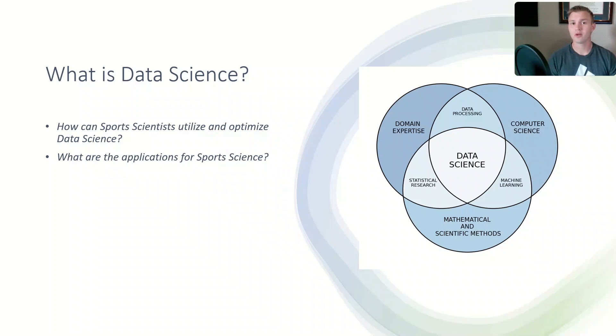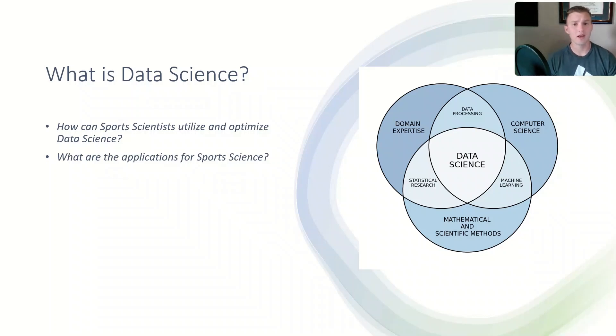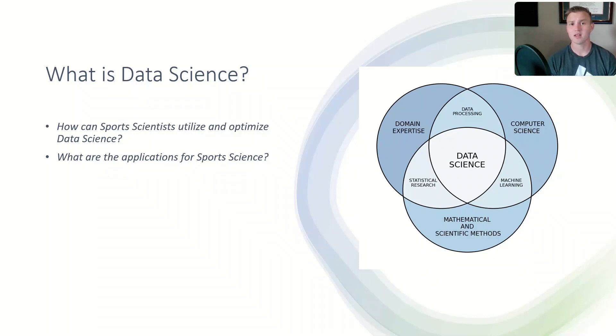Before we understand what artificial intelligence is, we need to first look at what data science is. Data science is the intersection of your domain expertise, computer science, and mathematics and scientific methods.